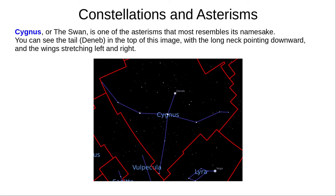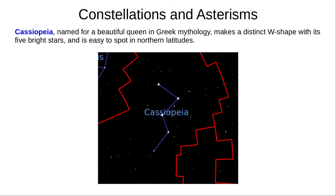While most asterisms need a good dose of imagination, Cygnus, the swan, actually looks like a swan. You can see Deneb as its tail at the top of the image, the neck pointing downwards, and the wings stretching left and right. Cassiopeia is named for a beautiful queen in Greek mythology. Her five bright stars make a distinct W shape, which is easy to spot in northern latitudes.